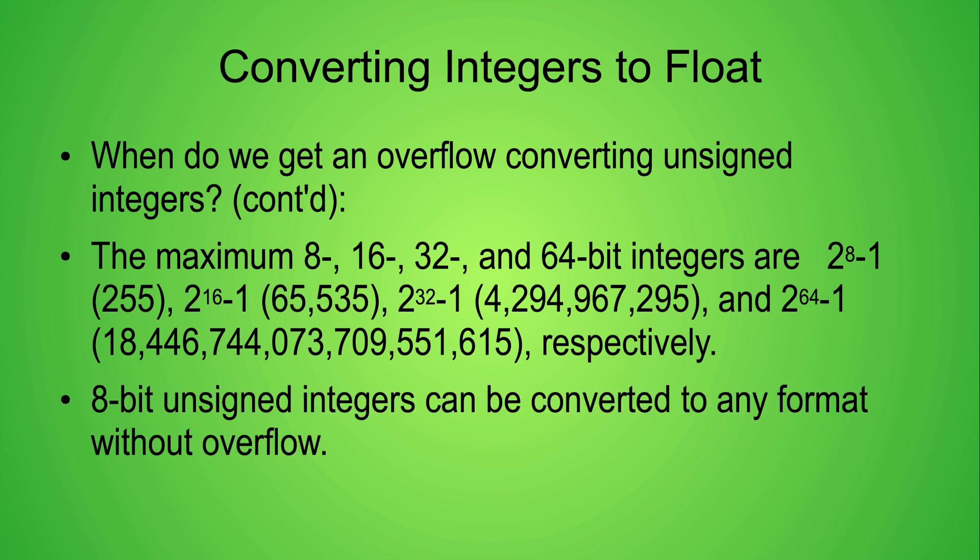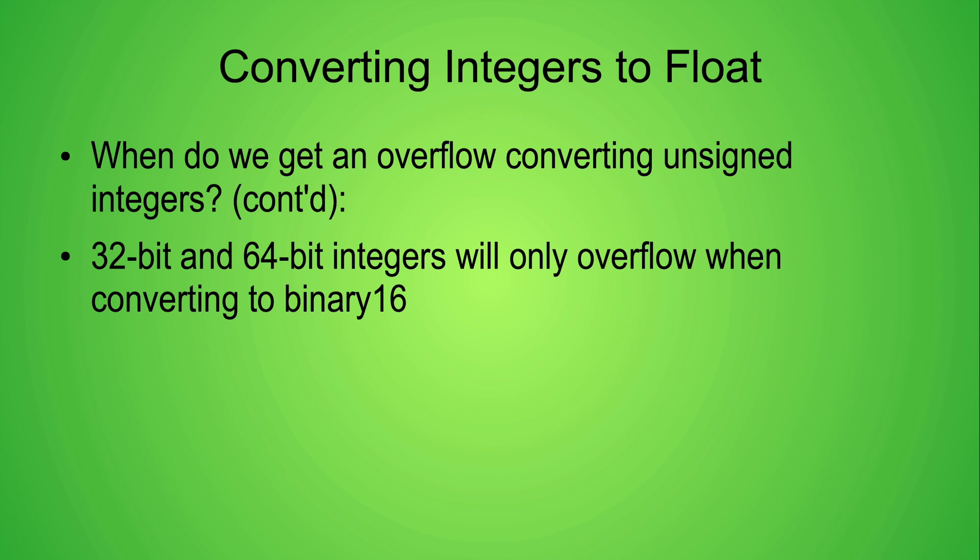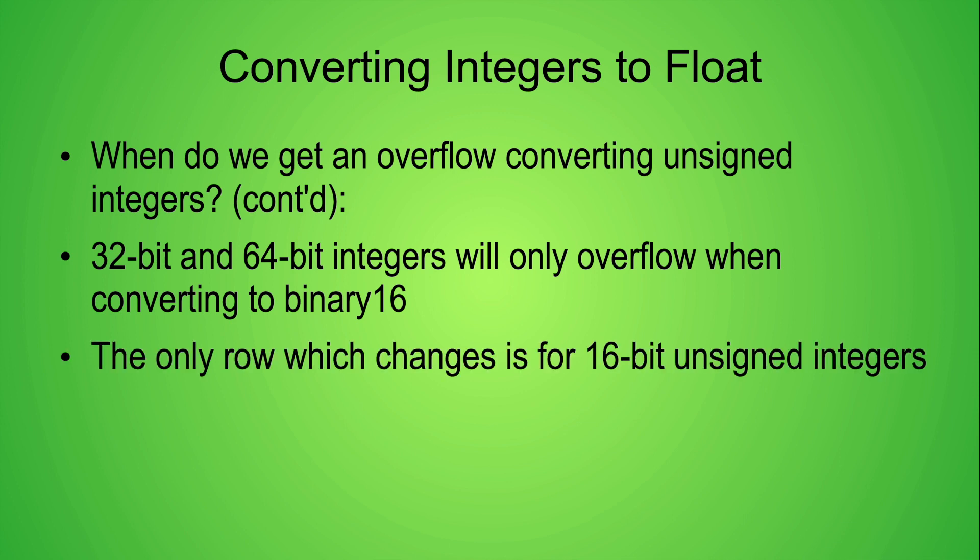We can convert 8-bit unsigned integers to any of the IEEE 754 binary floating point formats without overflow. Similarly, when converting 32 and 64-bit unsigned integers we will only get an overflow when converting to the binary16 format. So for the 8, 32, and 64-bit unsigned integer types our table doesn't change. The only row of our table which changes is the row for converting 16-bit unsigned integers.